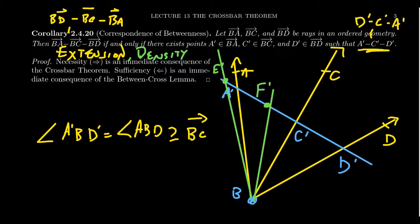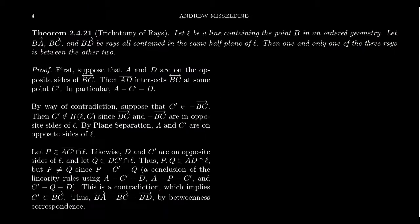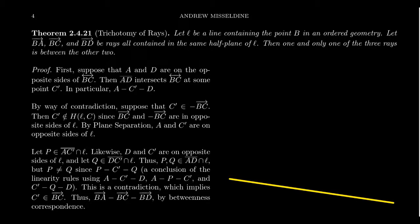Not everything corresponds perfectly. It is also true that trichotomy holds — we know trichotomy holds for three collinear points. Would it also be true that trichotomy holds for three concurrent rays sharing the same vertex? The answer is it's almost true; we have to take a slightly weaker statement. And that's what we're going to prove right now.